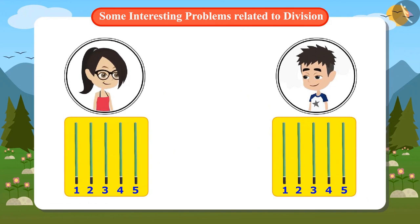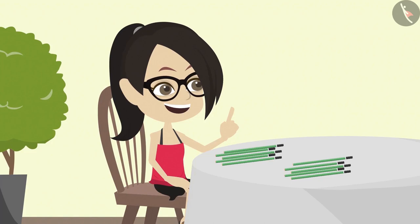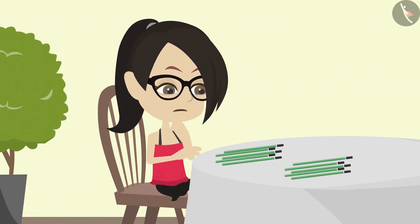But I did not need to do that. I can know immediately by dividing that both will have 5 pencils. Vandana has understood that she can divide and distribute things. But she still does not understand one thing.